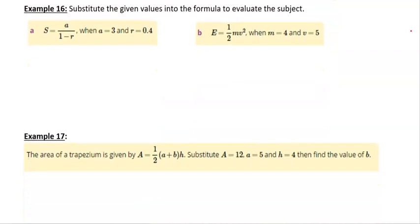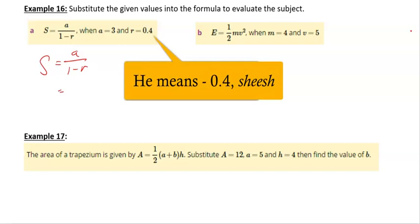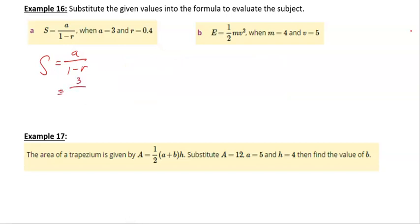Substitute the given values. We should be pretty good at this. We want to find what s is when we know that a is 3 and r is negative 4. So we're going to keep our equal signs lined up. I'm going to substitute 3 in the place of a, and I'm going to substitute 1 minus 0.4, which will give us 3 over 0.6 is what's left. And then I work that out, and I've evaluated that the answer to 3 divided by 0.6 is 5. So s is equal to 5.